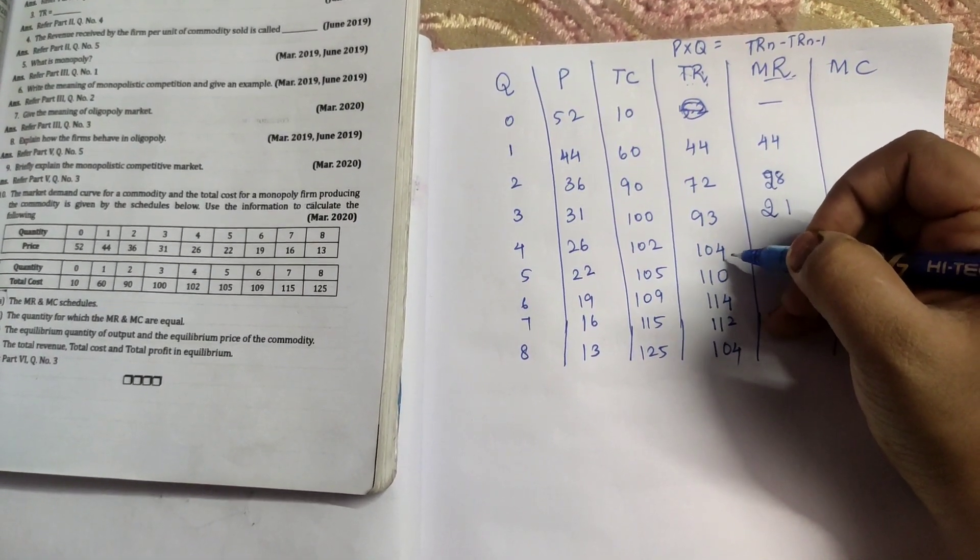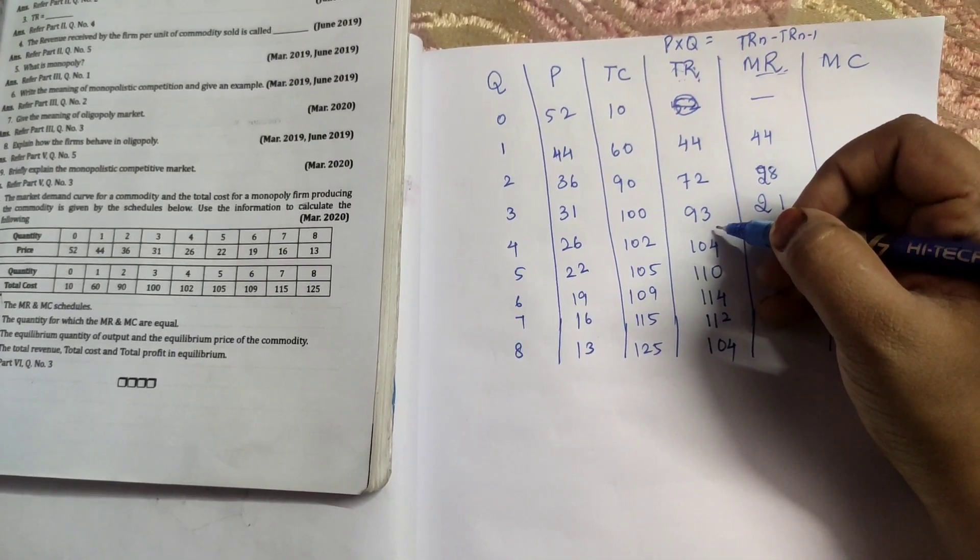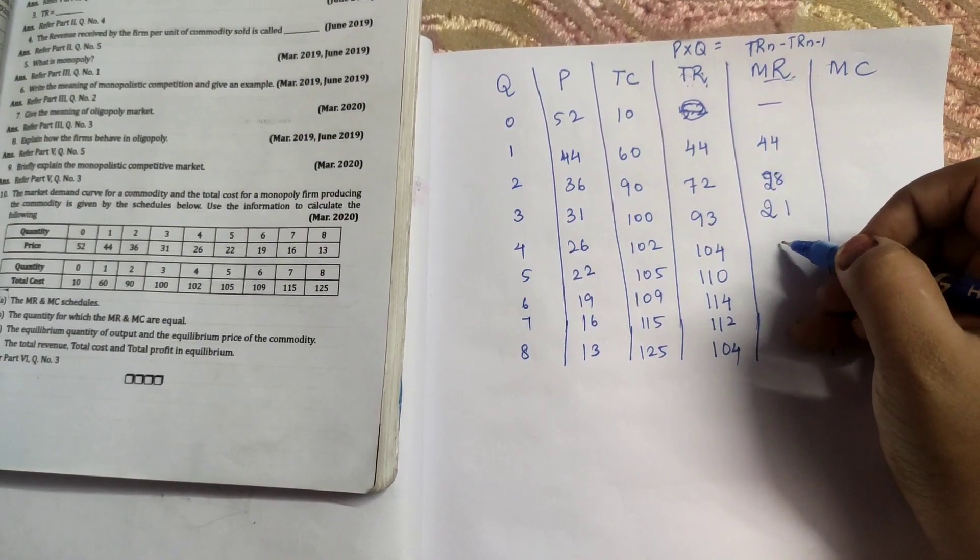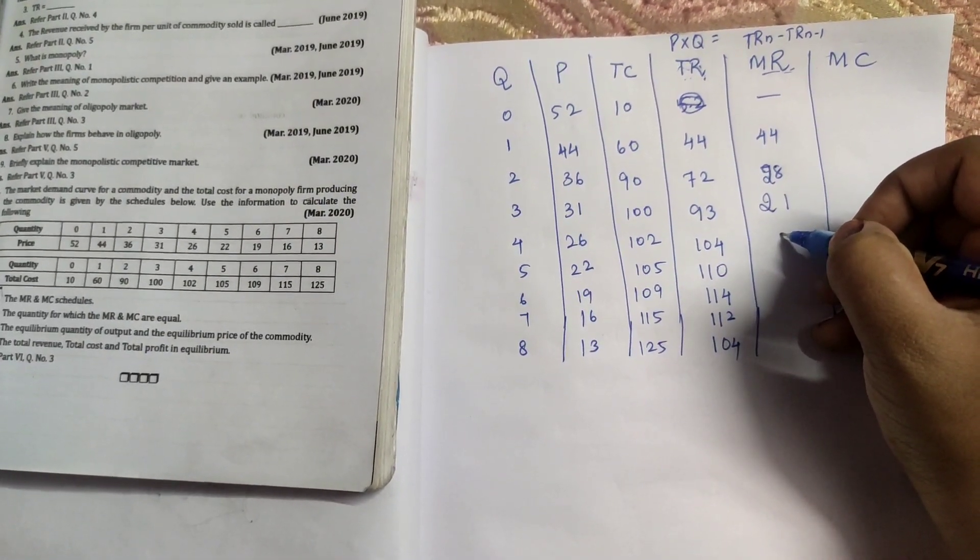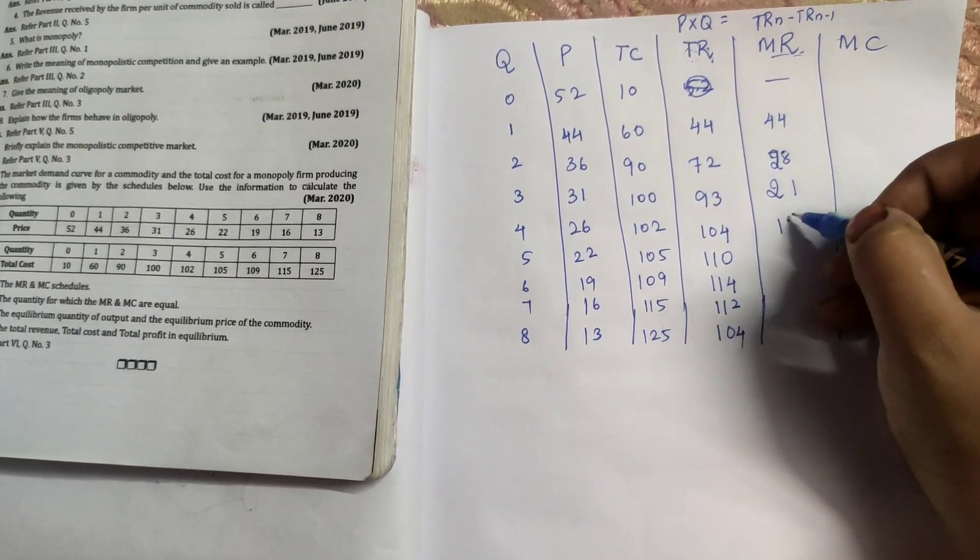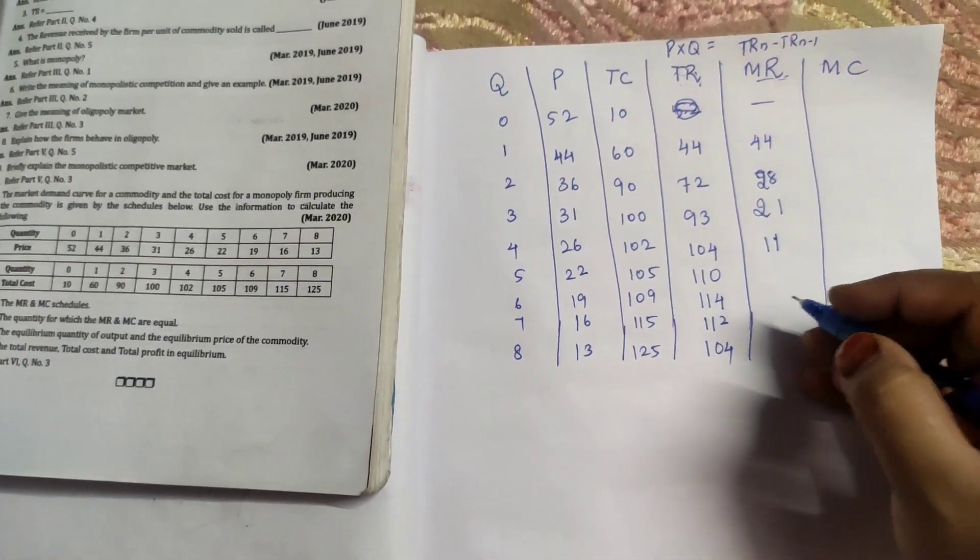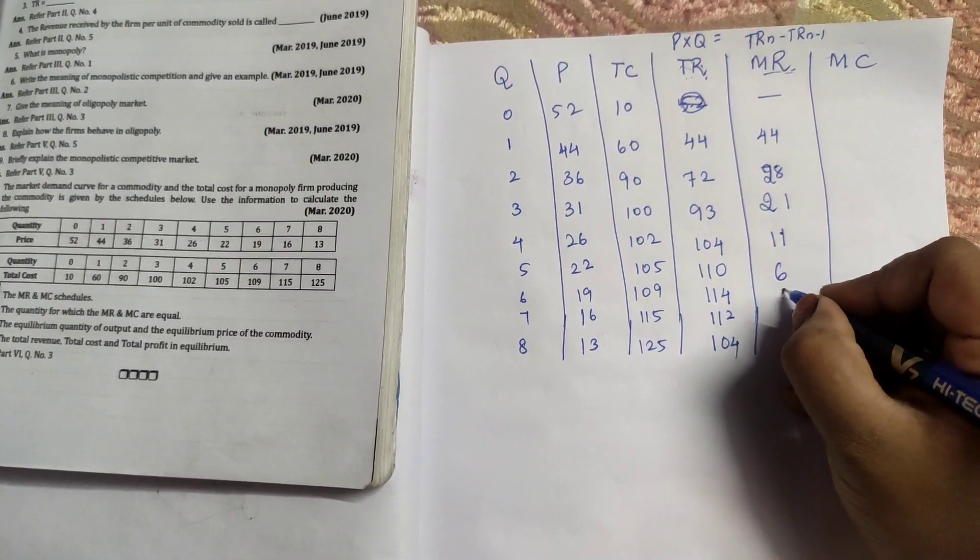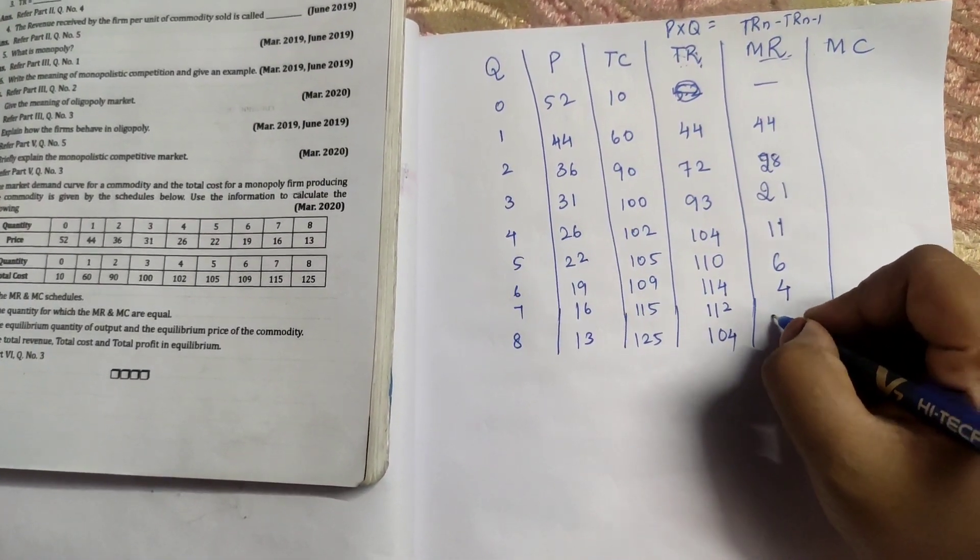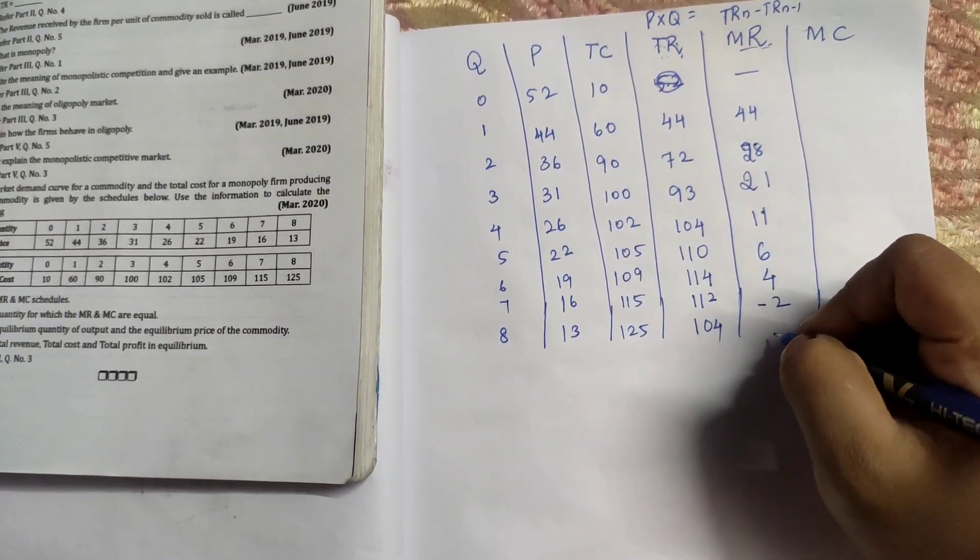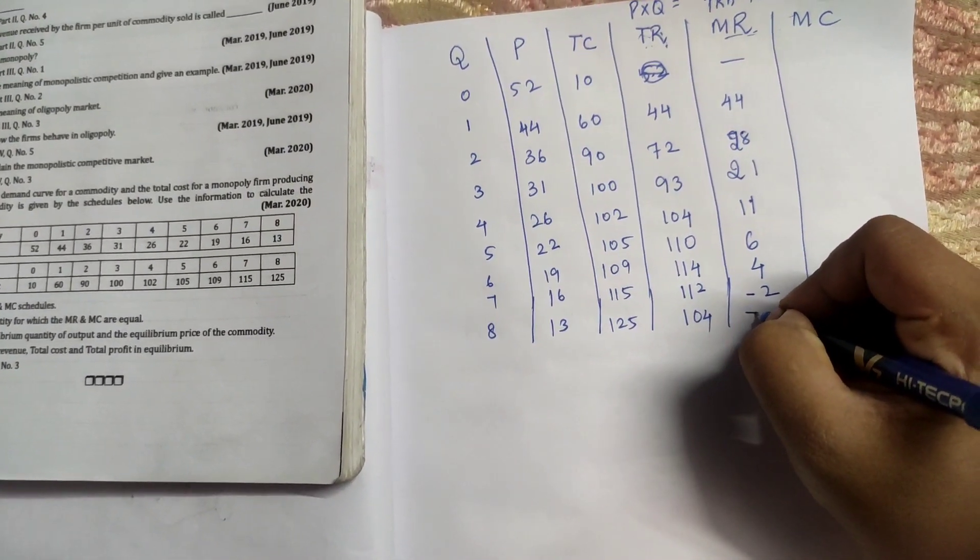After that we have 104 minus 93, it is 11. 110 minus 104 is 6. 114 minus 110 is 4. 112 minus 114 is minus 2. 104 minus 112 is minus 8.